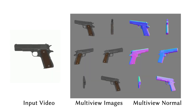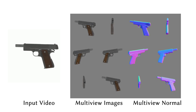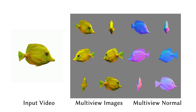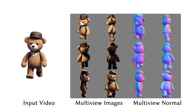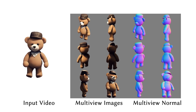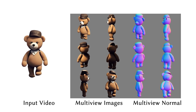Diving deeper, we've expanded our method's capabilities to produce temporally consistent normals using ControlNet, which demonstrates the potential of our method for diverse applications. As shown in the video, the normal maps not only align well with the multi-view images, but also keep a stable shape throughout the process.